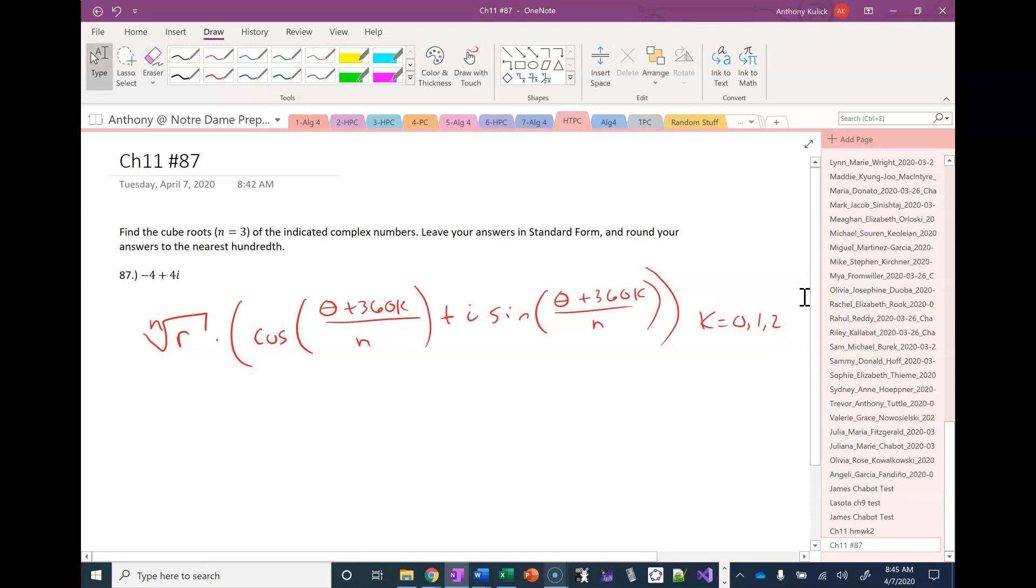So we should be getting three answers. Those three answers are for when k equals zero, one, and two because it's always starting at zero up to n minus one. So this is the equation that we're going to be using.